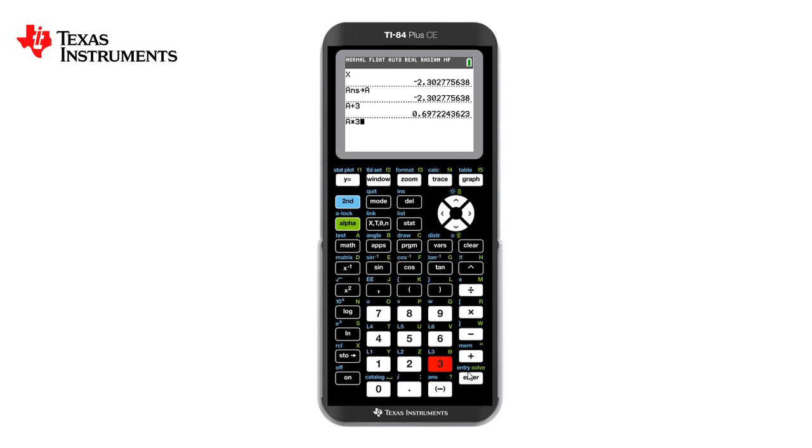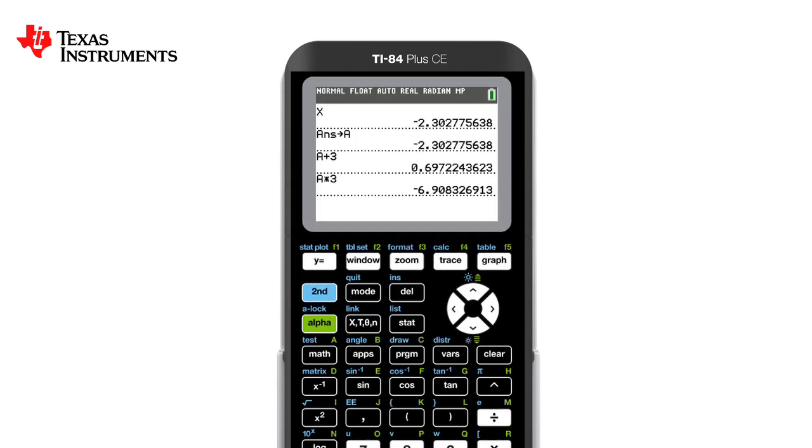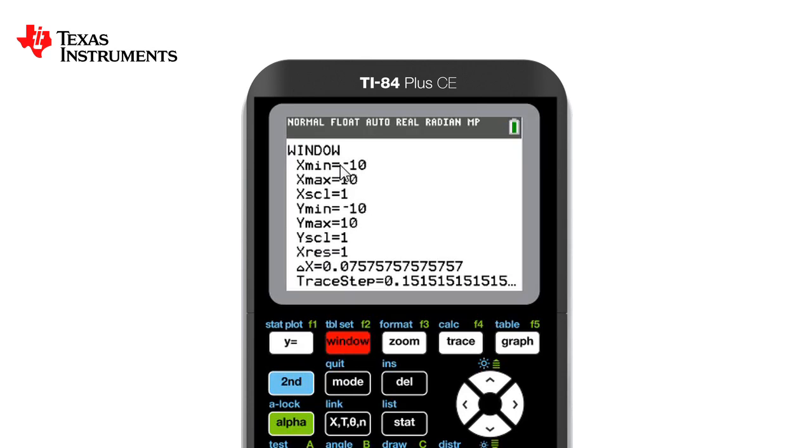If we want to change the view of which we see the graph, we can press window. As you can see at the moment, it is set from minus ten to ten in both axes.